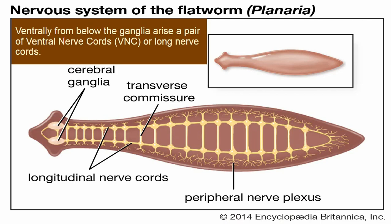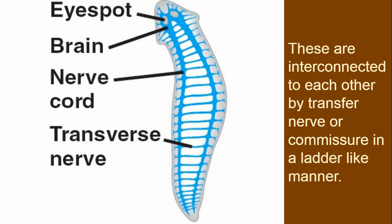Ventrally, from below the ganglia, arises a pair of ventral nerve cords or long nerve cords. From the lower side of this ganglion, two nerve cords extend downward. These are interconnected to each other by transverse nerves or commissures in a ladder-like manner. These two nerve cords are connected to each other by transverse nerves in a ladder-like pattern, and this connection is called a commissure.